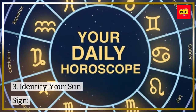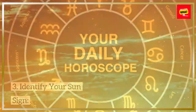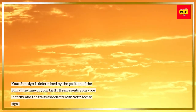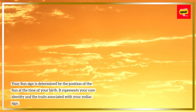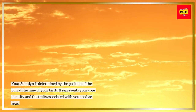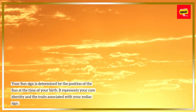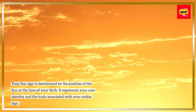Step 3: Identify your sun sign. Your sun sign is determined by the position of the sun at the time of your birth. It represents your core identity and the traits associated with your zodiac sign.